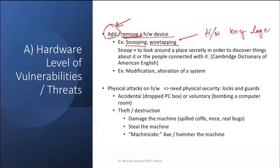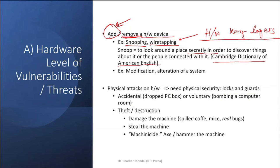A key logger is a small device that can be connected to any desktop wherever someone is using a wired or wireless keyboard — it can read everything typed by the computer owner. Snooping means to look around a place secretly in order to discover things about it or the people connected with it, per the Cambridge Dictionary of American English.